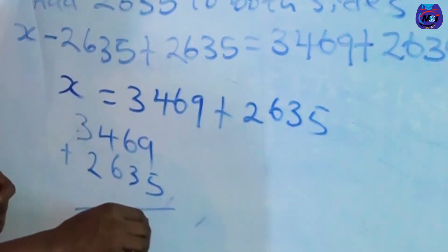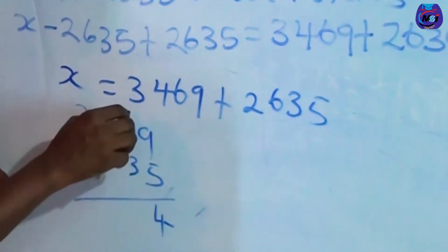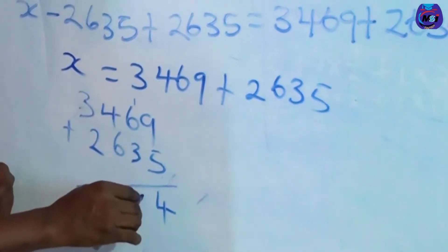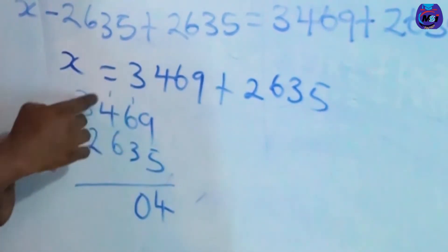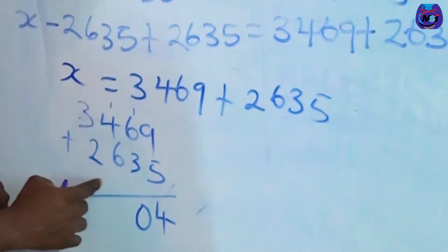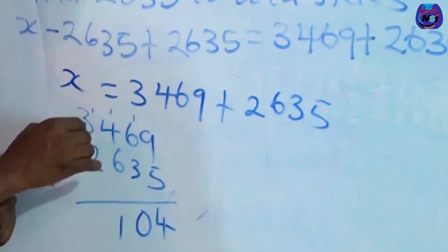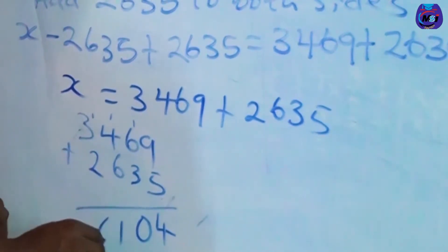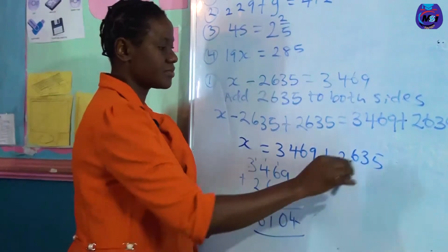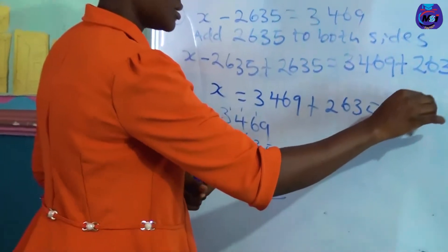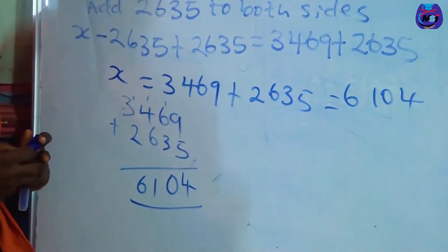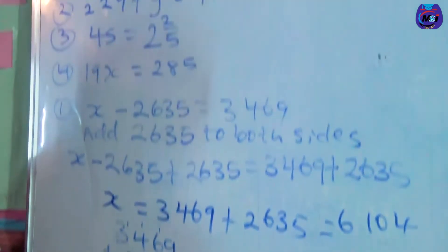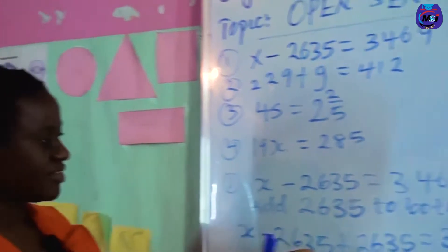3469 plus 2635: 9 plus 5 is 14, write 4 and lift 1. 1 plus 6 is 7, 7 plus 3 is 10, write 0 and lift 1. 1 plus 4 is 5, 5 plus 6 is 11, write 1 and lift 1. 1 plus 3 is 4, 4 plus 2 is 6. So our answer becomes 6104. Let's go to the second example. In this case what we have done is addition.